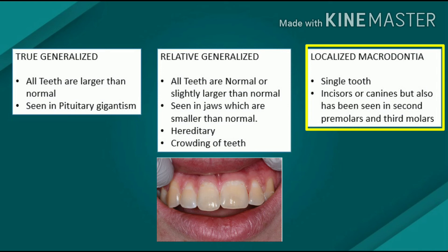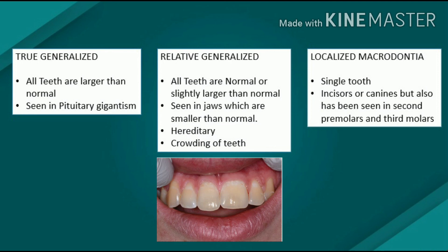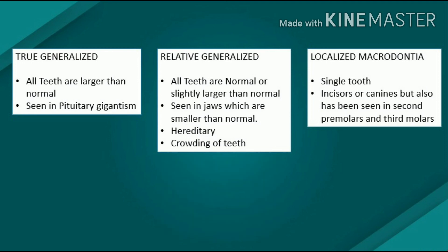True macrodontia of a single tooth should not be confused with fusion of teeth, in which, early in odontogenesis, the union of two or more teeth results in a single large tooth. A variant of this localized macrodontia is the type occasionally seen in cases of hemihypertrophy of the face, in which the teeth of the involved side may be considerably larger than those of the unaffected side.